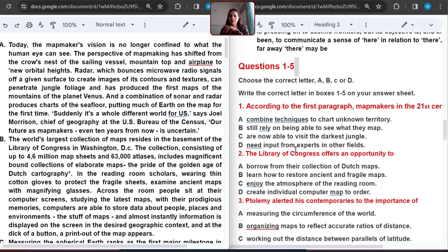Let's read the options. Combined techniques to chart unknown territory. Radar has shifted from crowd's nest of sailing vessels to new orbital heights. So I think A is matching, but still we have to read all three. Still rely on being able to see what they map. Are now able to visit the darkest jungle. Jungle kind of thing was there, but this is just one example. Need input from experts in other fields - nothing is given. So here they are saying everything they are doing it with the help of radar, microwave, radio signals. These are all techniques. So I will just mark it A number with first question.